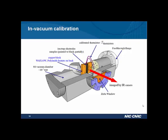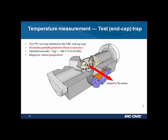The test ion trap is currently under construction and almost finished. We hope to put this into the system within the next few weeks. In conclusion, we have set up the vacuum system and infrared camera system to do the temperature measurement, and we have some preliminary results for the infrared camera calibration. The test trap is currently under construction.